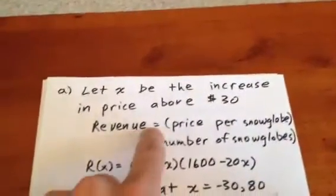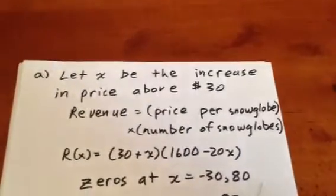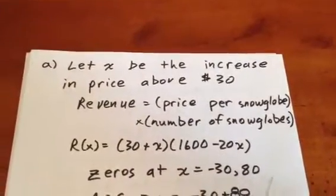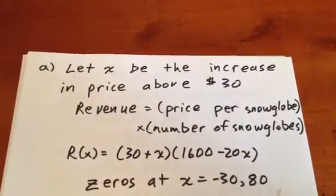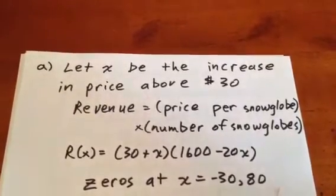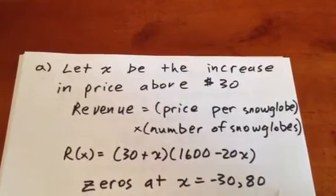So we know our revenue is going to be, in a simple sense, the price per snow globe times the number of snow globes. We know that the price per snow globe will be 30 plus X, because we're starting at a reference price of $30, and we're adding X dollars to it.